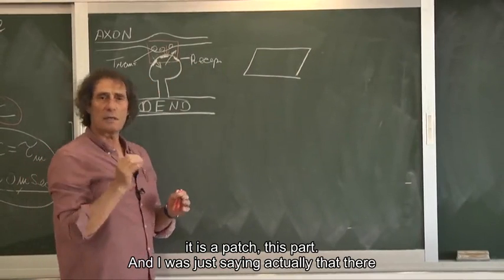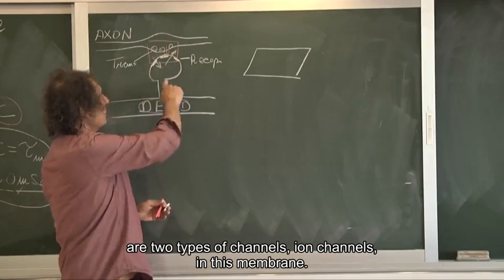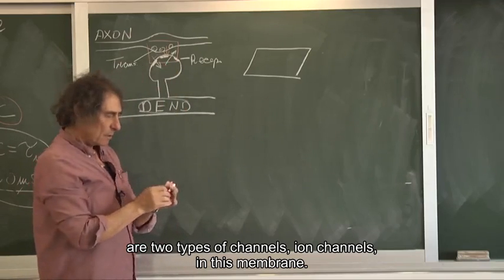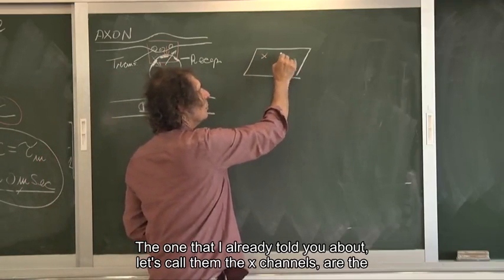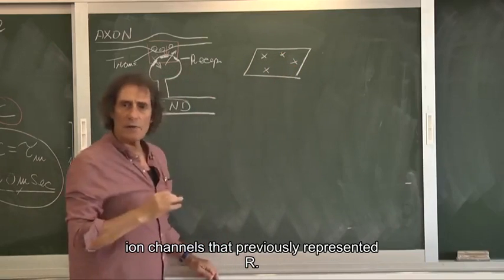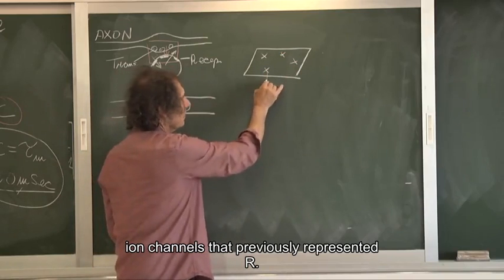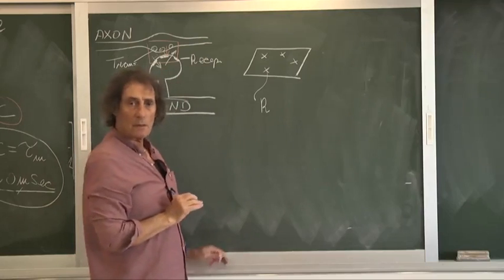And I was just saying actually that there are two types of channels, ion channels in this membrane. The one that I already told you about, let's call them the X channels, are the ion channels that previously represented R, the passive resistance.